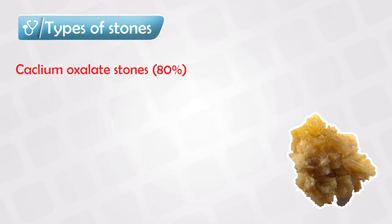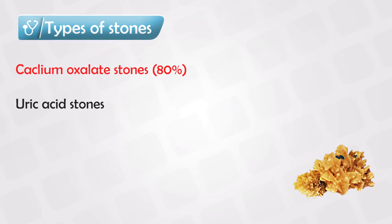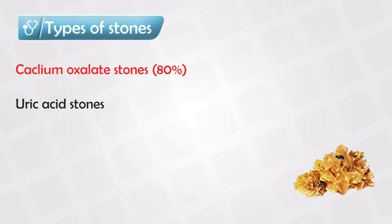The most common type of stone is a calcium-based stone, or calcium oxalate, and this accounts for up to 80% of cases. The most common risk factor is increased calcium in the blood, as this excess calcium deposits in the kidneys and causes these stones. The other type is uric acid stones. These small stones are almost needle-shaped and can be invisible on X-rays, so they are sometimes harder to detect.